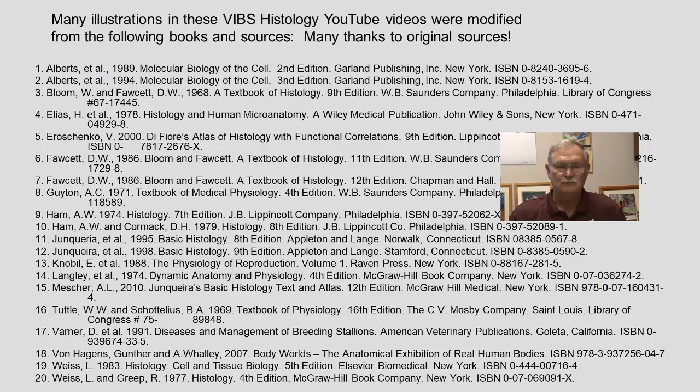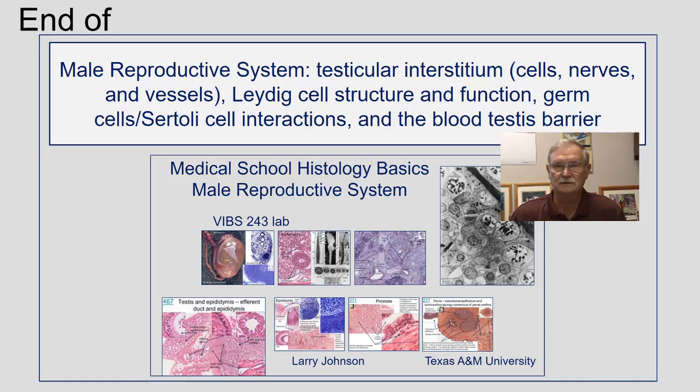We want to acknowledge the original sources of diagrams and images that may be used here that were taken from the textbooks, and we herein acknowledge that with this slide. So this is the end of the male reproductive system, testicular interstitium, cells, nerves, vessels, Leydig cell structure and function, germ cell cytosolic interactions, and the blood-testis barrier.